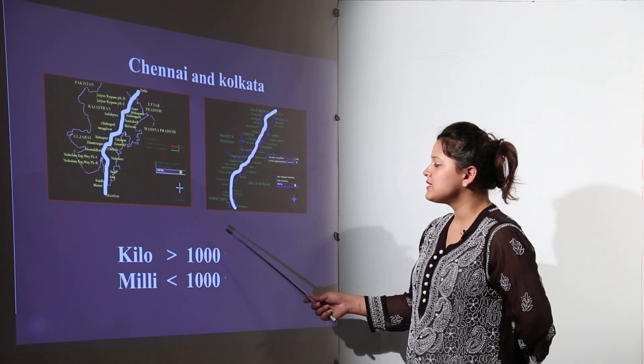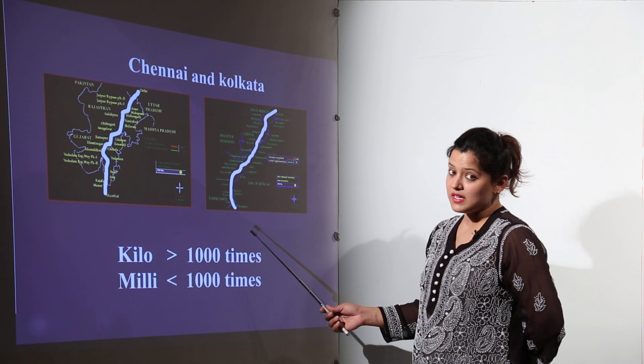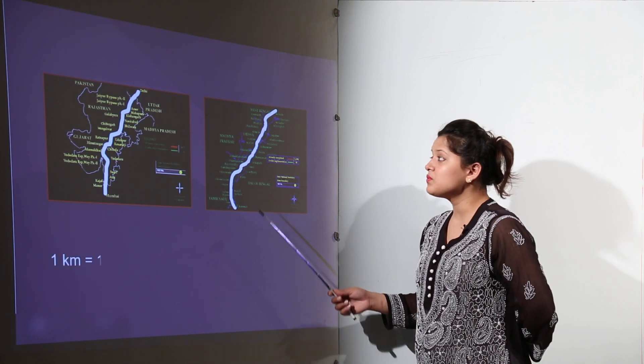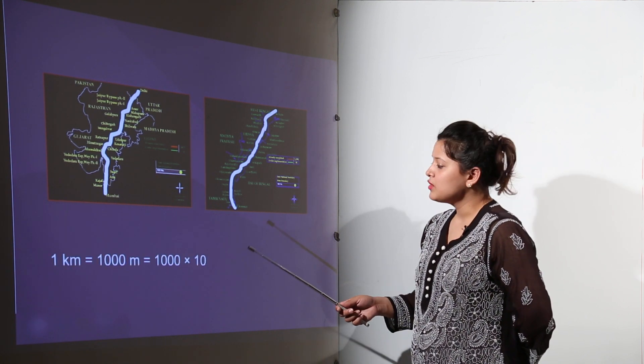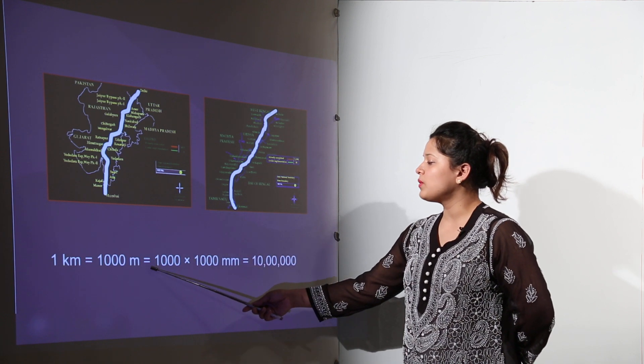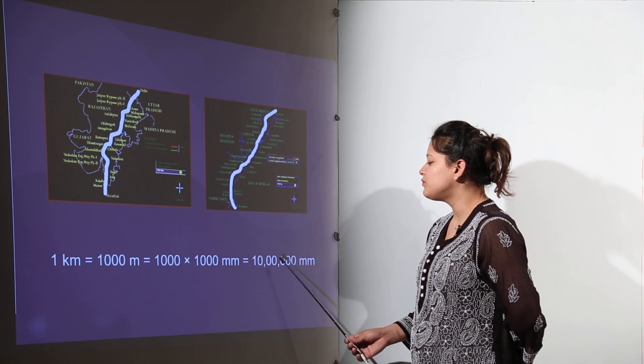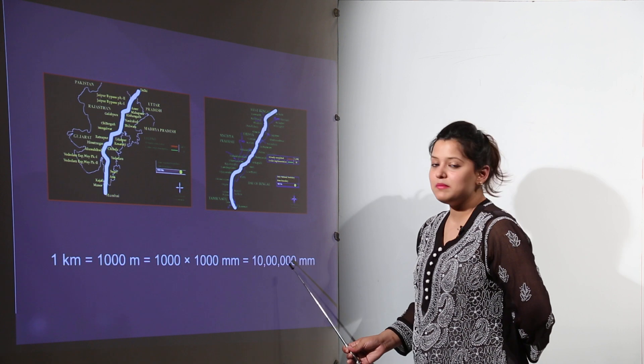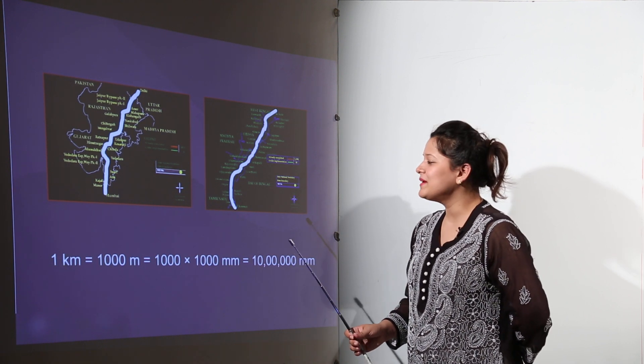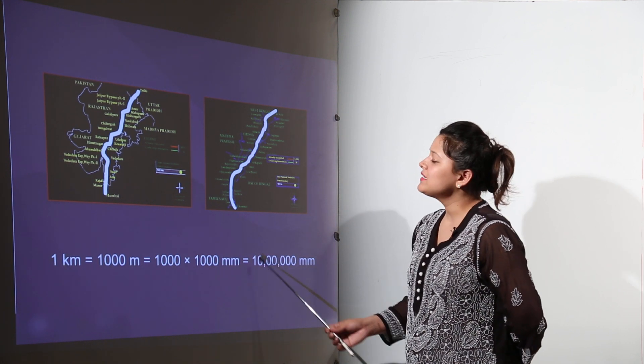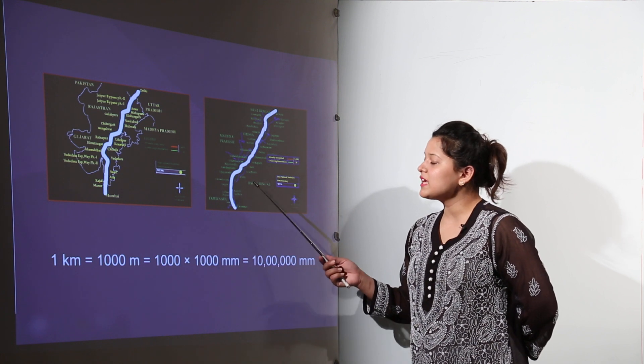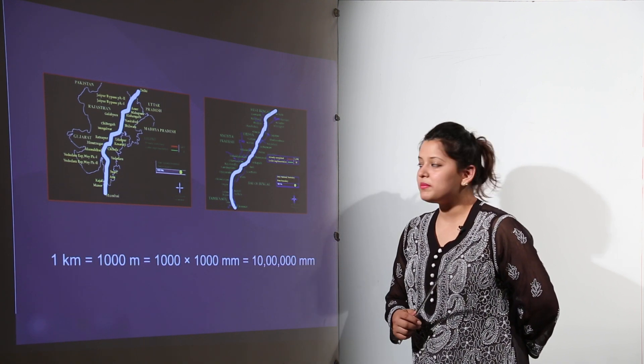So one kilometer is definitely greater one thousand times, right? And millimeter is one thousand times smaller. So one kilometer is equal to one thousand meters or that would be ten lakh millimeters as we have learnt to read the big numbers now, right? So the large distances can be measured with the help of kilometers.